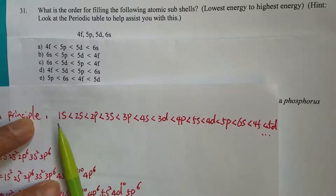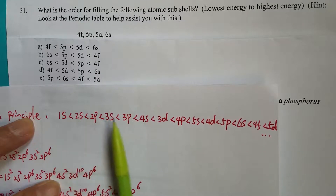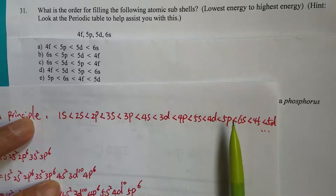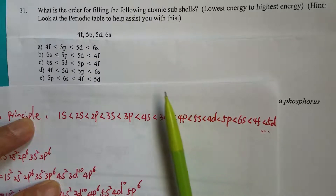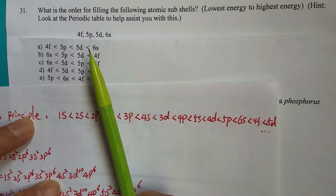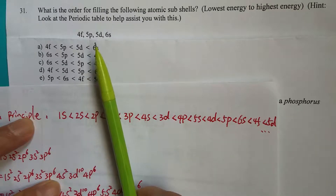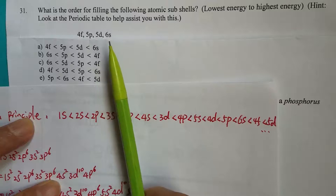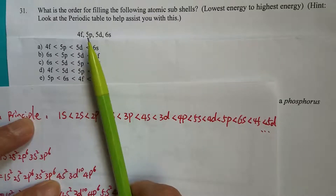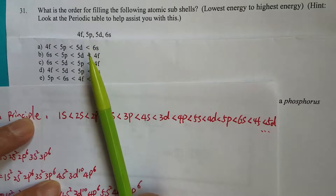Let's use the Aufbau principle — it's easier to see from here. So what do we have? We have 4f, 5p, 5d, and 6s. Now, you may say okay, 4f is probably the lowest one — but no.